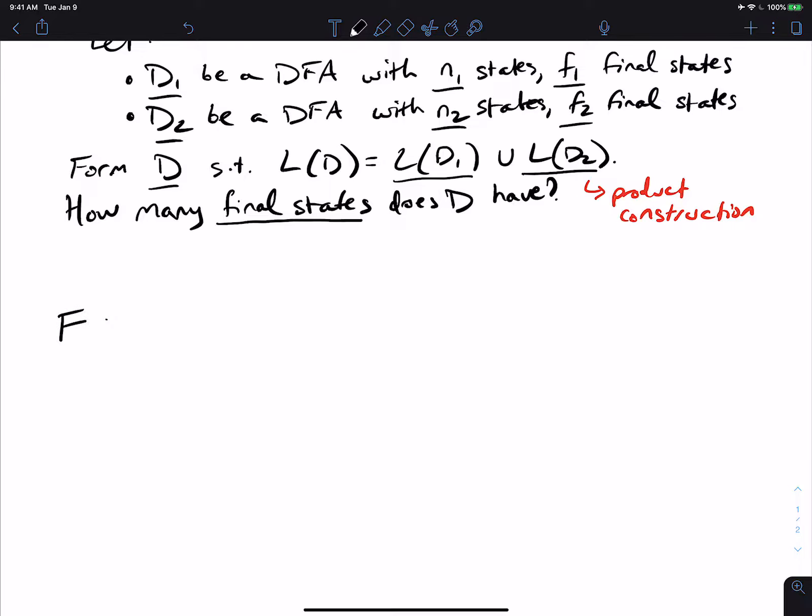So let's go to thinking about what does the final states formed mean. So if we look at the final states, remember that it's all the states of the form Q1, Q2, such that Q1 is a final state of the original,